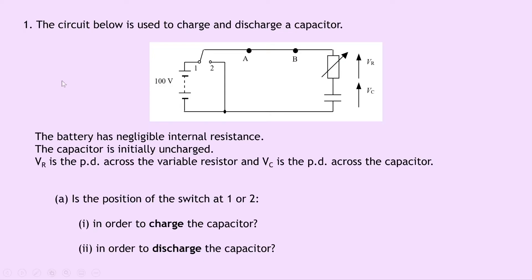Question 1 says that the circuit below is used to charge and discharge a capacitor. The battery has negligible internal resistance and the capacitor is initially uncharged. VR is the potential difference across the variable resistor and VC is the potential difference across the capacitor, labelled on the diagram. We've got two points A and B, a switch that can be at position 1 or 2, and a 100V supply.